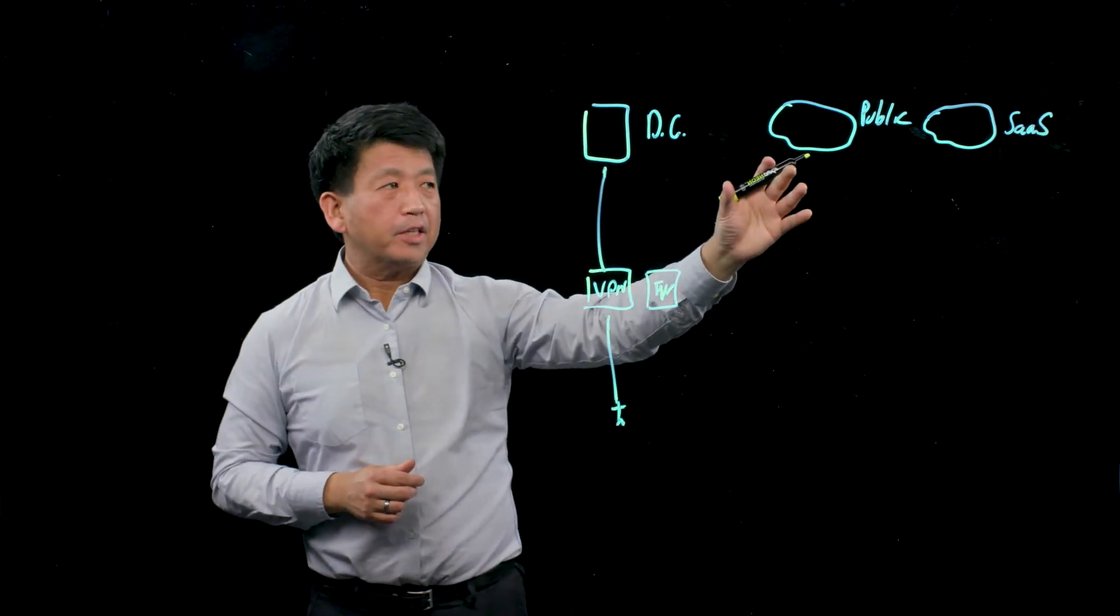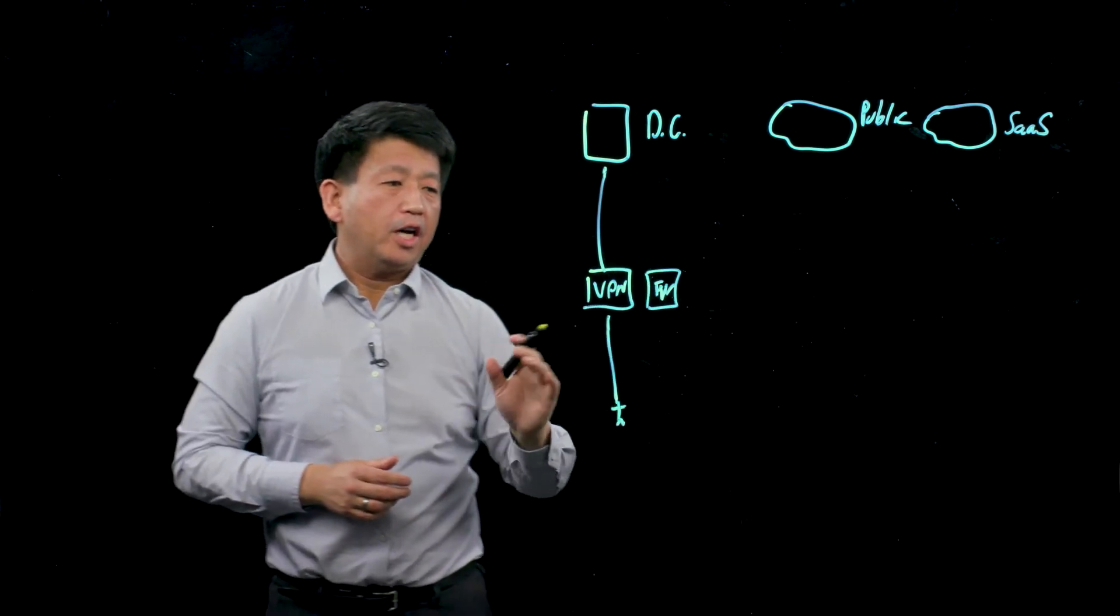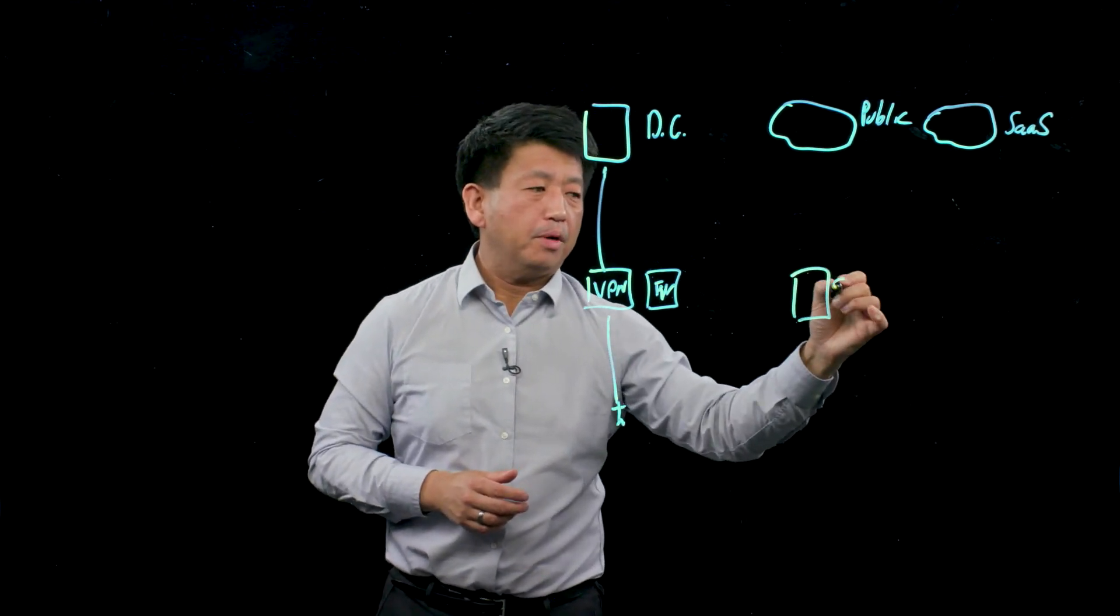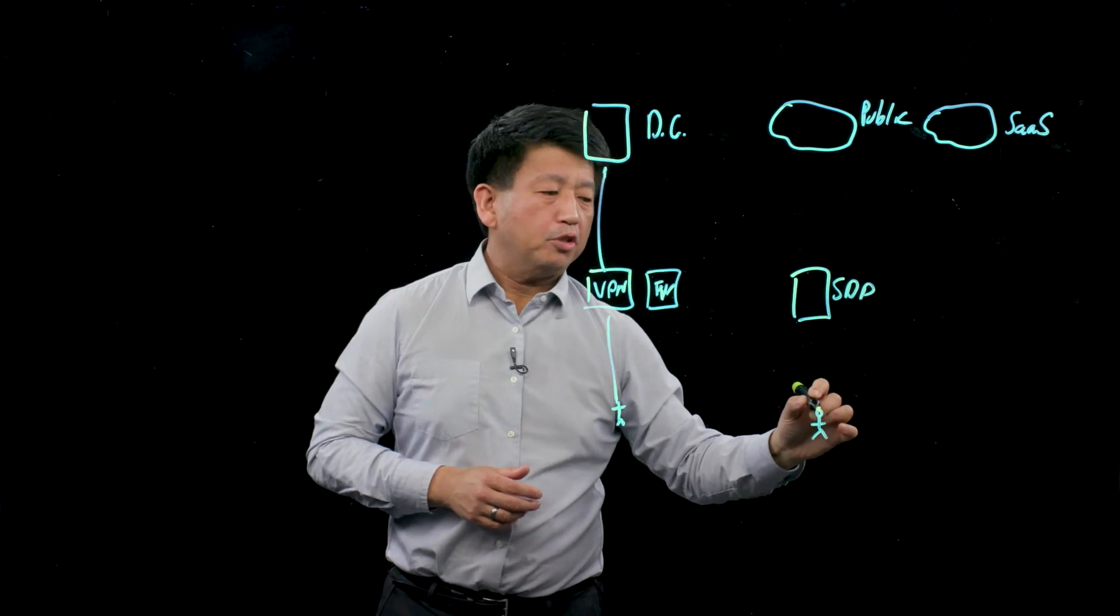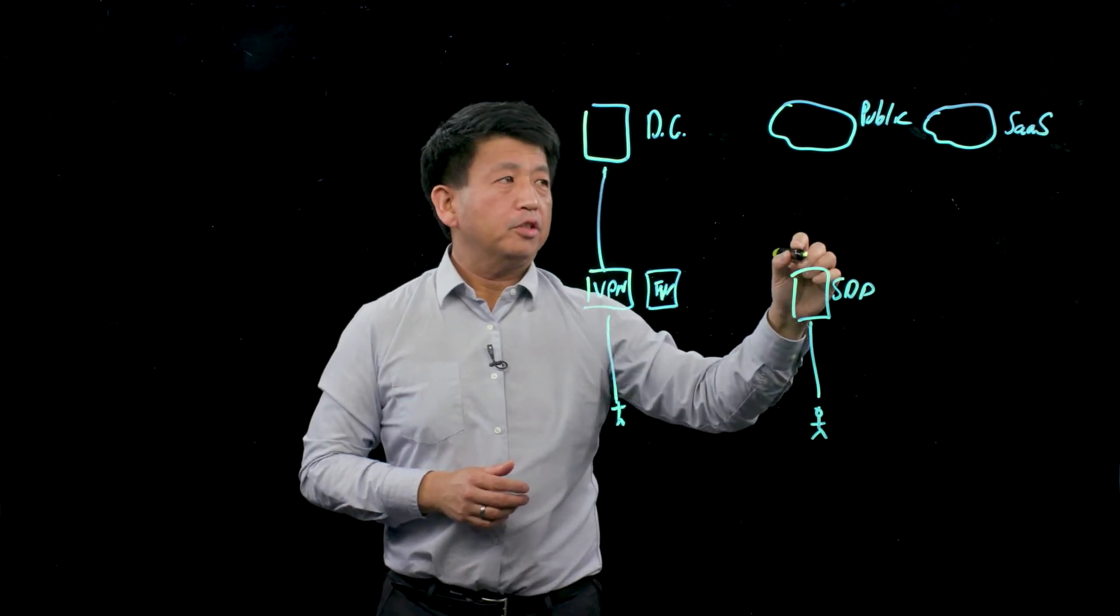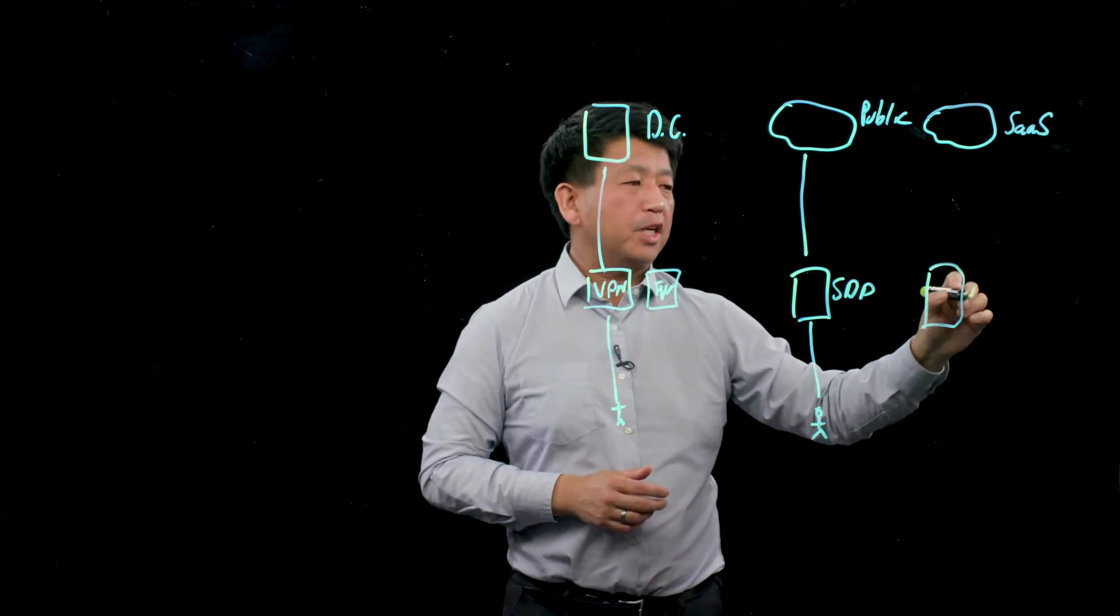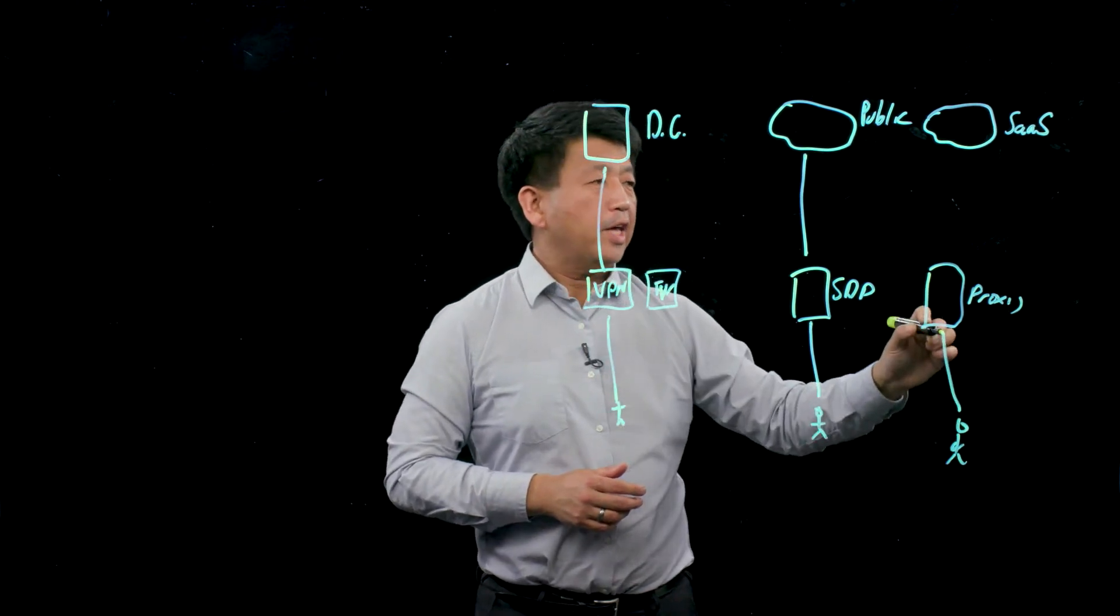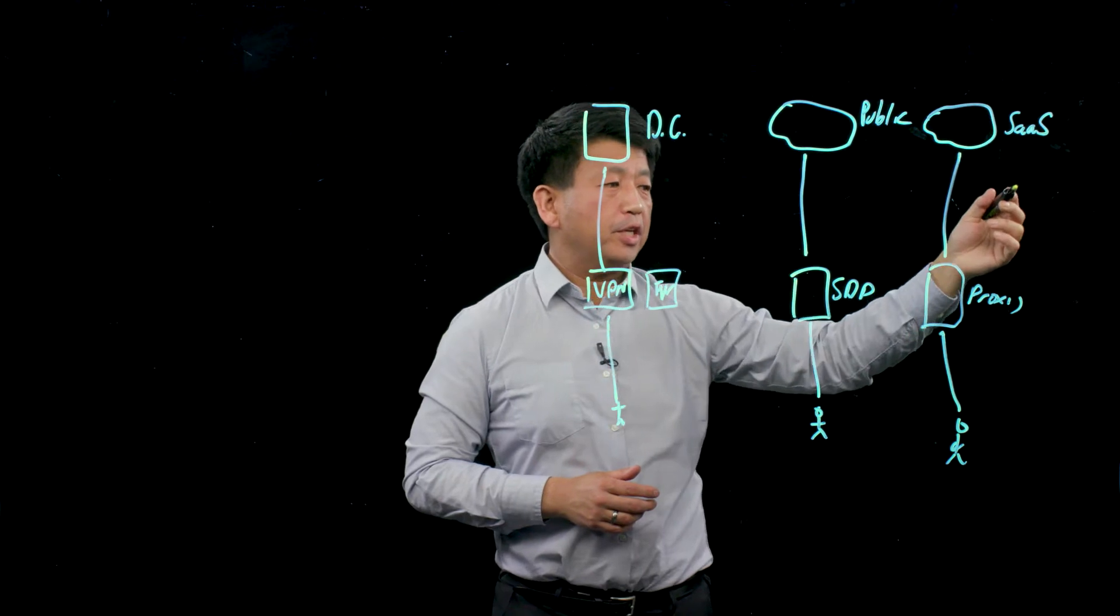But when you're thinking about public cloud, for instance, a lot of organizations are shifting away from the VPN and looking at software-defined perimeter, so that users would be using a different technology to reach the public cloud. Or they would be using some type of proxies that would gate their access to SaaS or inspect traffic to the internet.